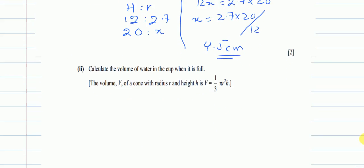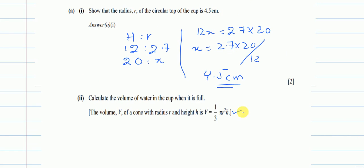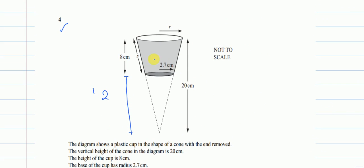Now let's go to part B: calculate the volume of the water in the cup when it is full. The formula for the volume of a cone is given. The cup is not a full cone — a cone has a pointed end — so we cannot just use the cone formula directly. What we do is take the big cone and subtract the small cone to get the remaining volume we want.